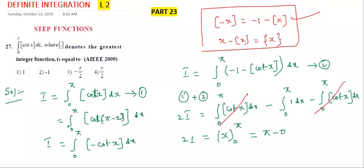This is 2I value, then what is I? I is equal to pi by 2. So which option is correct? But here negative is there, I am not written negative, so write here negative. This is minus pi by 2, third option is correct.